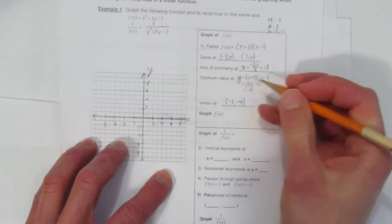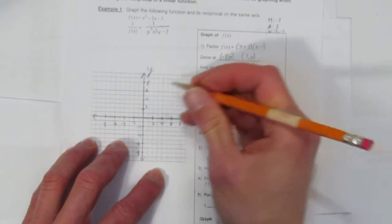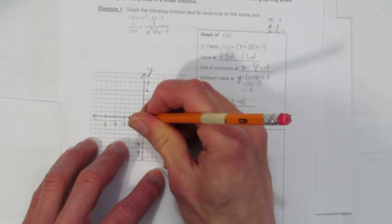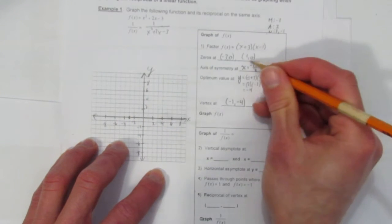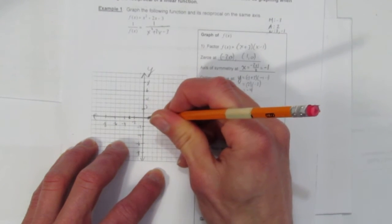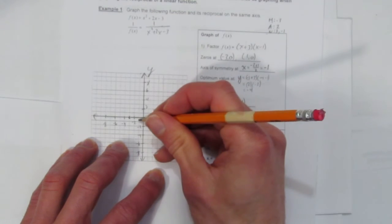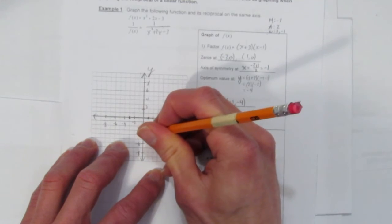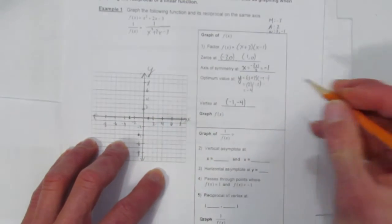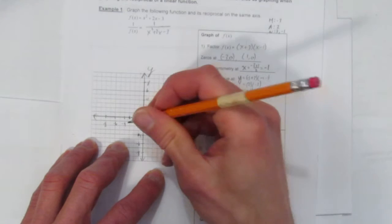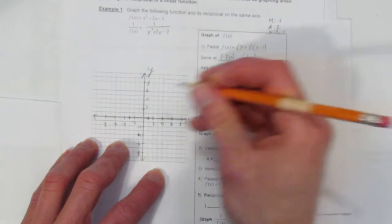And now let's label. Let's put this graph on. We know its zeros are at (-3, 0) and (1, 0). Those are the zeros. And we know the vertex is at (-1, -4). It's down here. That's all we need to graph for the purpose of this question. It's just the vertex and the zeros.